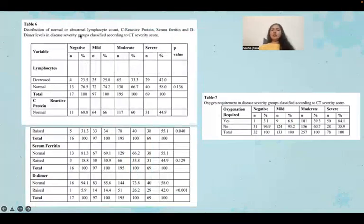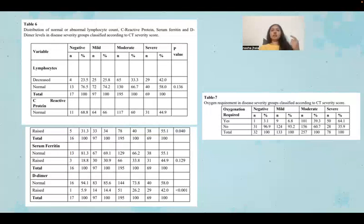Table six shows the distribution of normal or abnormal lymphocyte count, CRP, serum ferritin, and D-dimer levels across disease severity groups classified according to CT severity score. Among diseased patients, TLC was decreased, and D-dimer, serum ferritin, and CRP levels were raised. However, these did not show statistical significance, as seen from the p-values.